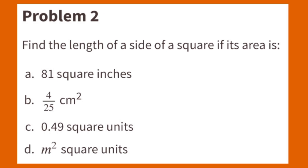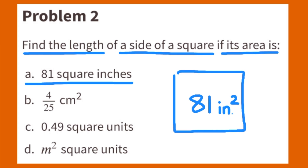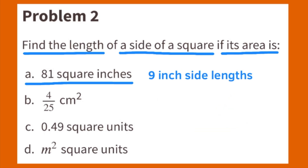Number 2. Find the length of the side of a square if its area is A, 81 square inches. Since the side lengths of squares are always equal, the length of one side times the length of the other side will always equal the square's area. 9 squared, or 9 times 9, is 81. Square A has 9-inch side lengths.